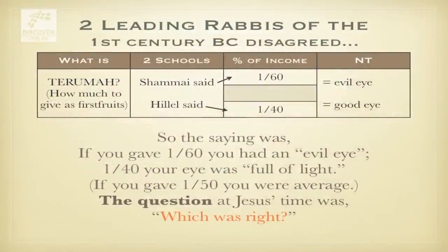But if your eye is evil, that is, you're stingy, and you give only 1/60th of your income as Terumah, then your whole body will be full of darkness. If therefore the light that is in you is darkness, how great is that darkness?